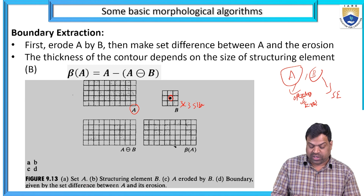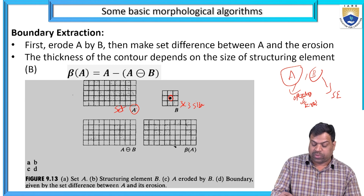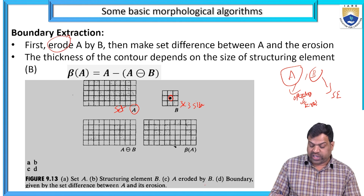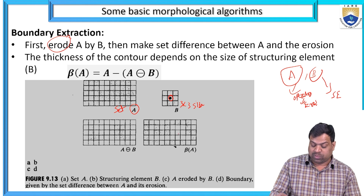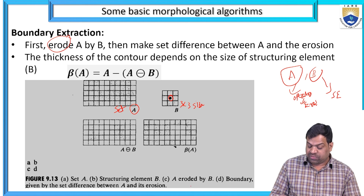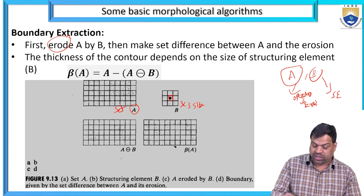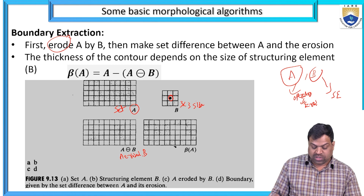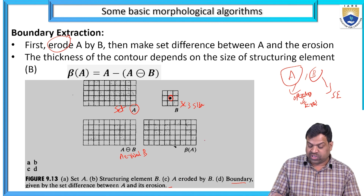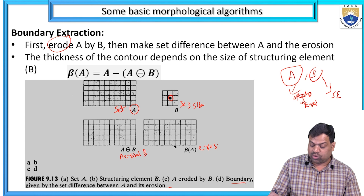It is A⊖B and beta(A). Set A is the operator — the original image. B is the structuring element, and A eroded by B means the structuring element is mapped with the original image. C is A eroded by B. The boundary is given by the set difference between A and its erosion.